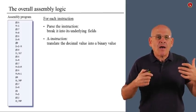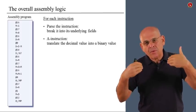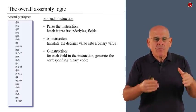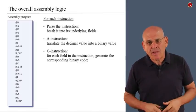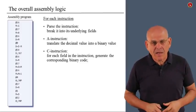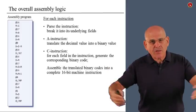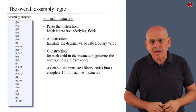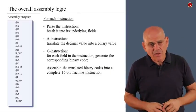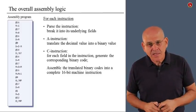So if we have an A instruction, we have the at sign and a value. We take this value, and we re-express it in binary code. If it's a C instruction, we split the instruction into its three fields, comp, dest, and jump. And also for every one of these fields, we generate the corresponding binary bits.